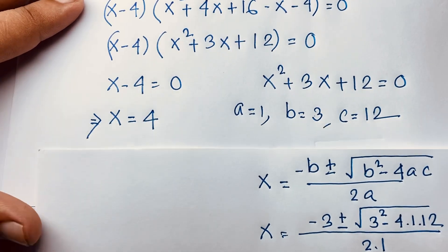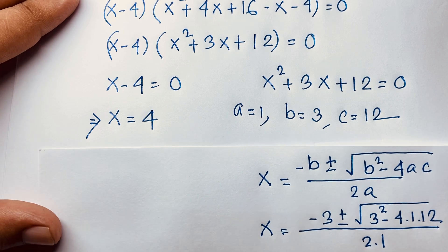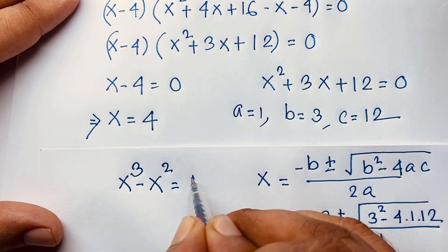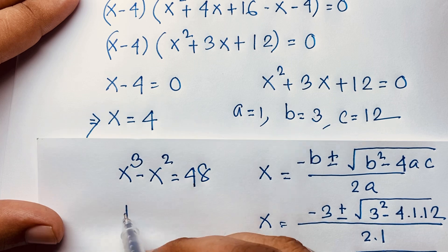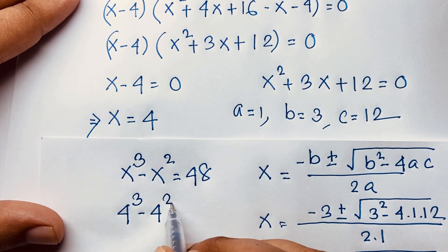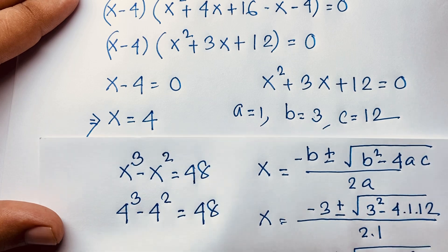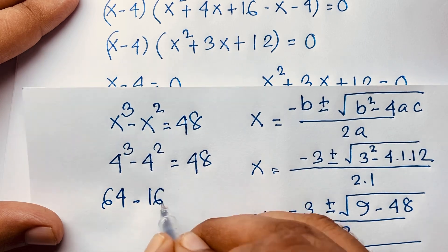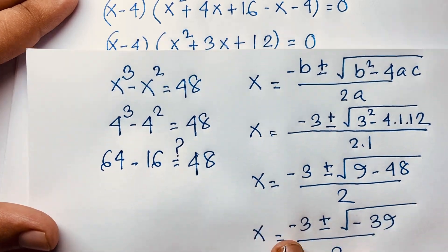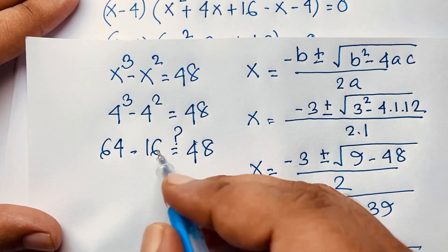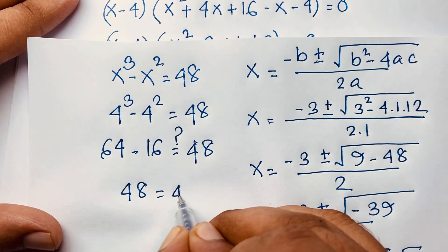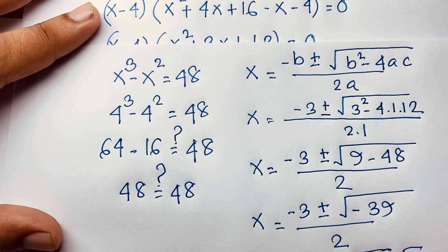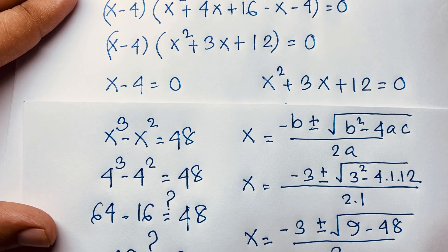Our real solution is x equals 4. Let's verify: x to the power 3 minus x squared equals 48. Substituting: 4 to the power 3 minus 4 to the power 2 equals 48. 4 to the power 3 equals 64, 4 to the power 2 equals 16, and 64 minus 16 equals 48, which equals 48. Left-hand side and right-hand side are both equal. So x equals 4 is our real solution in this exponential math problem.